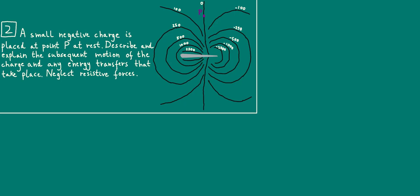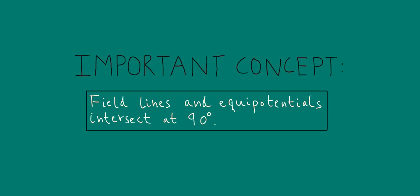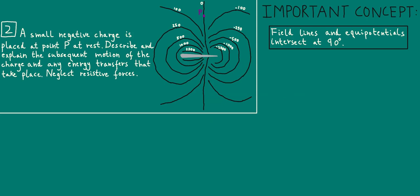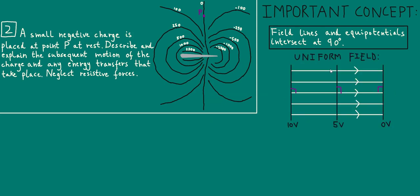Okay, welcome back. In the previous question, we saw that the potential gradient lets us work out the magnitude of the electric field strength. But field strength is a vector quantity — it has direction and magnitude. While we didn't need to discuss the direction of the field strength previously, it is important here in order to figure out the motion of the charge. An important principle in both electric and gravitational fields is that the field lines and equipotentials cross or intersect at 90 degrees.